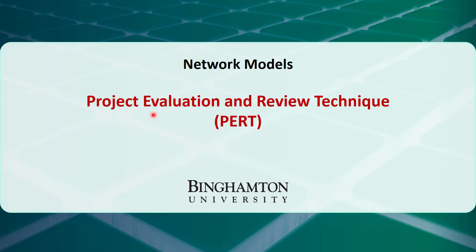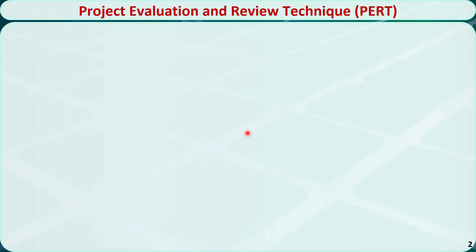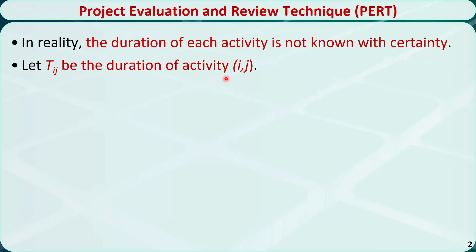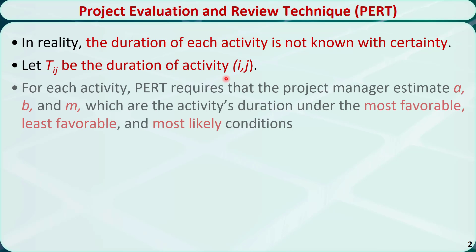In this video, I will talk about the project evaluation and review technique, or PERT. We have seen several project network examples so far. In those examples, we assume that the duration of each activity is known precisely. In reality, the duration of each activity cannot be estimated with 100% accuracy. So the duration of each activity ij can be modeled as a random variable tij. Then we can use PERT to estimate the duration of each activity and the duration of the critical path.